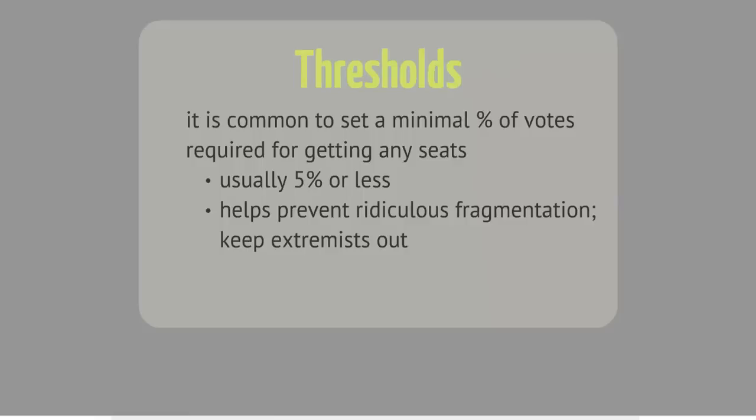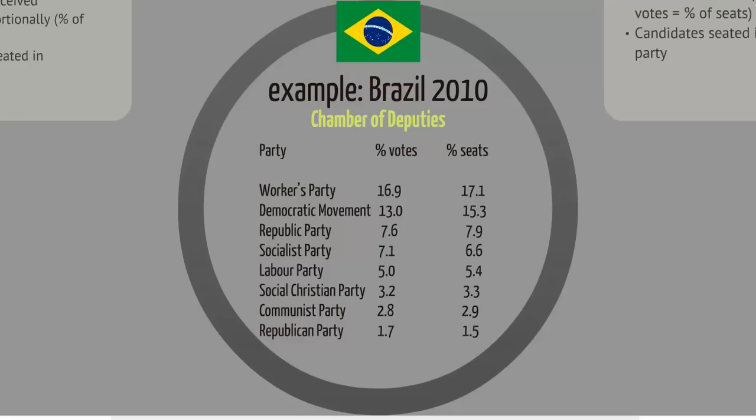So if there is a minimum threshold of 5% and your party gets 4.9% of the vote, you get no seats. Let's take a look at an example of proportional representation in action. Here are the results from Brazil's 2010 elections for the Chamber of Deputies, which is one of that state's two legislative bodies, very similar to our House of Representatives. Brazil has many political parties, and the percentage of the vote they received overall is very close to the percentage of seats they got in the legislature.